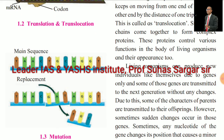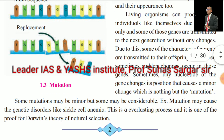See the pictures of mutation. Living organisms can produce new individuals like themselves due to genes, and some of those genes are transmitted to the next generation without any changes. However, sometimes a sudden change occurs in those genes. A nucleotide of the gene changes its position, causing a minor change which is called mutation. Some mutations may be minor but some may be considerable. For example, mutation may cause a genetic disorder like sickle cell anemia. This is an everlasting process and is one of the proofs for Darwin's theory of natural selection.